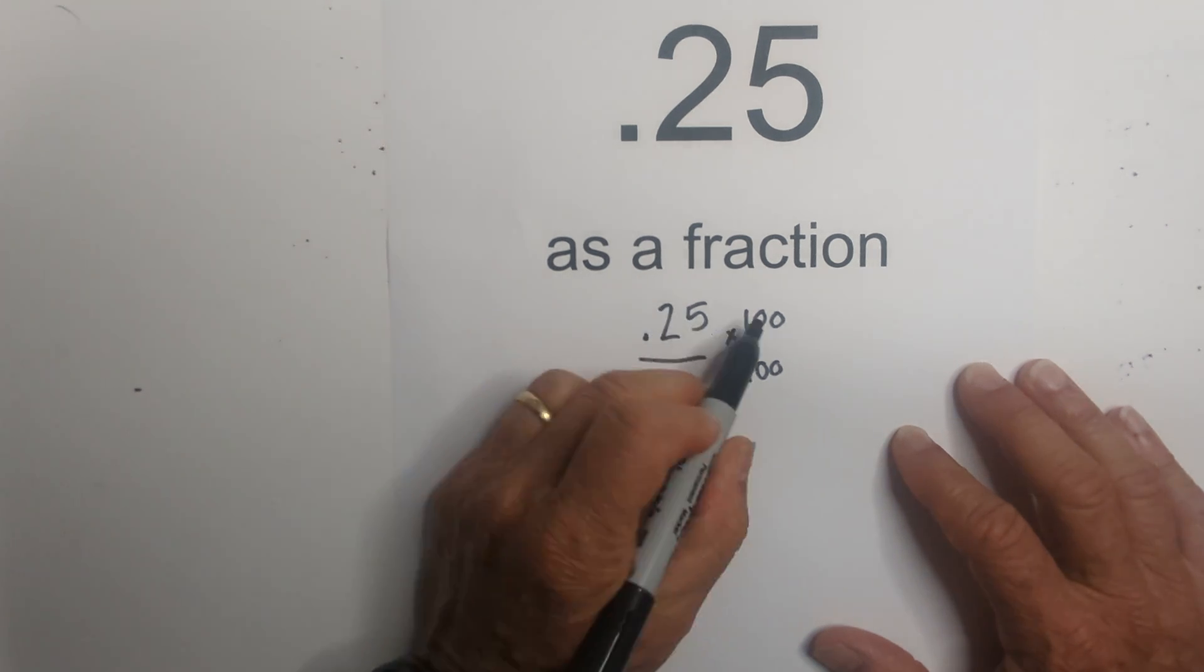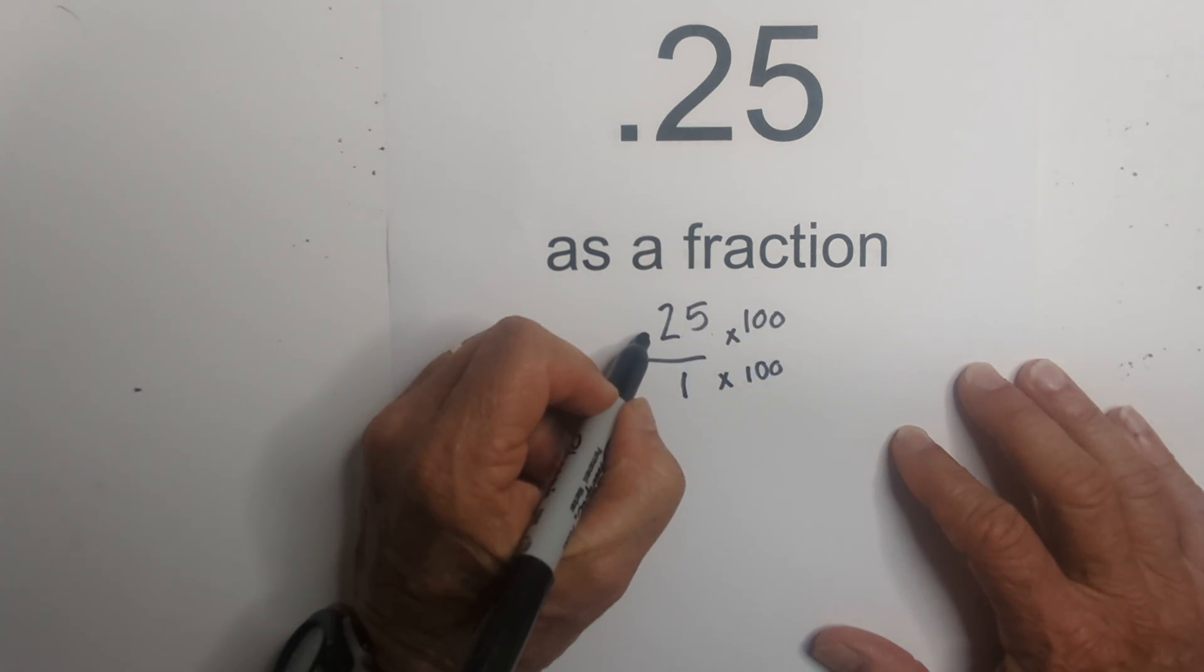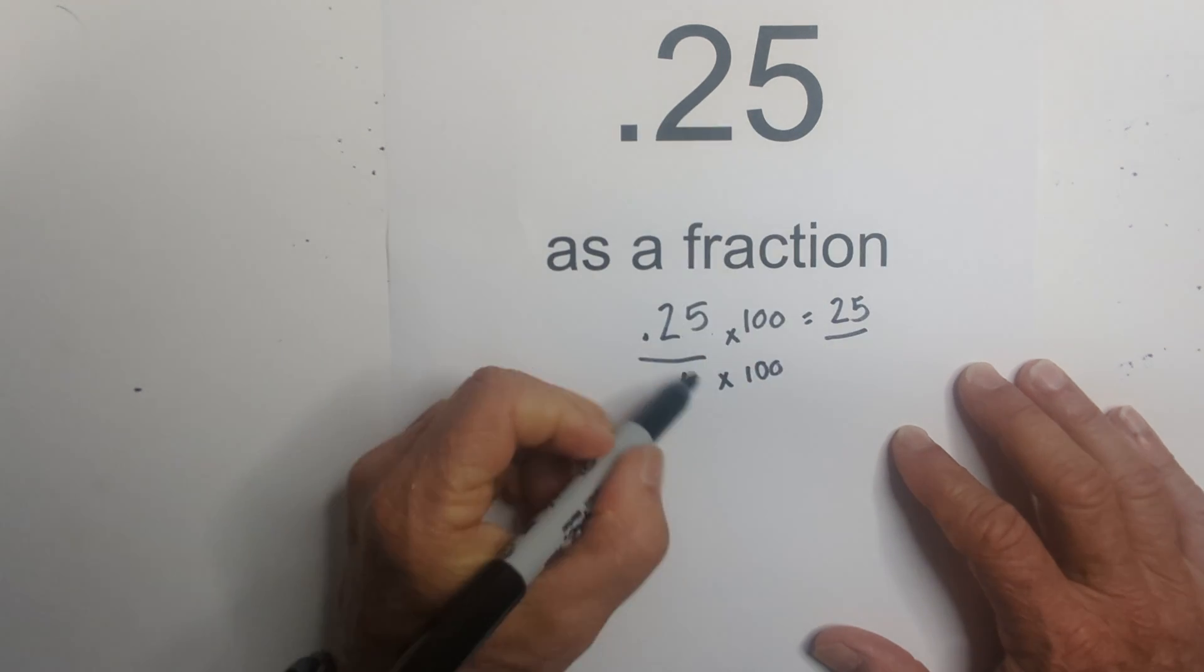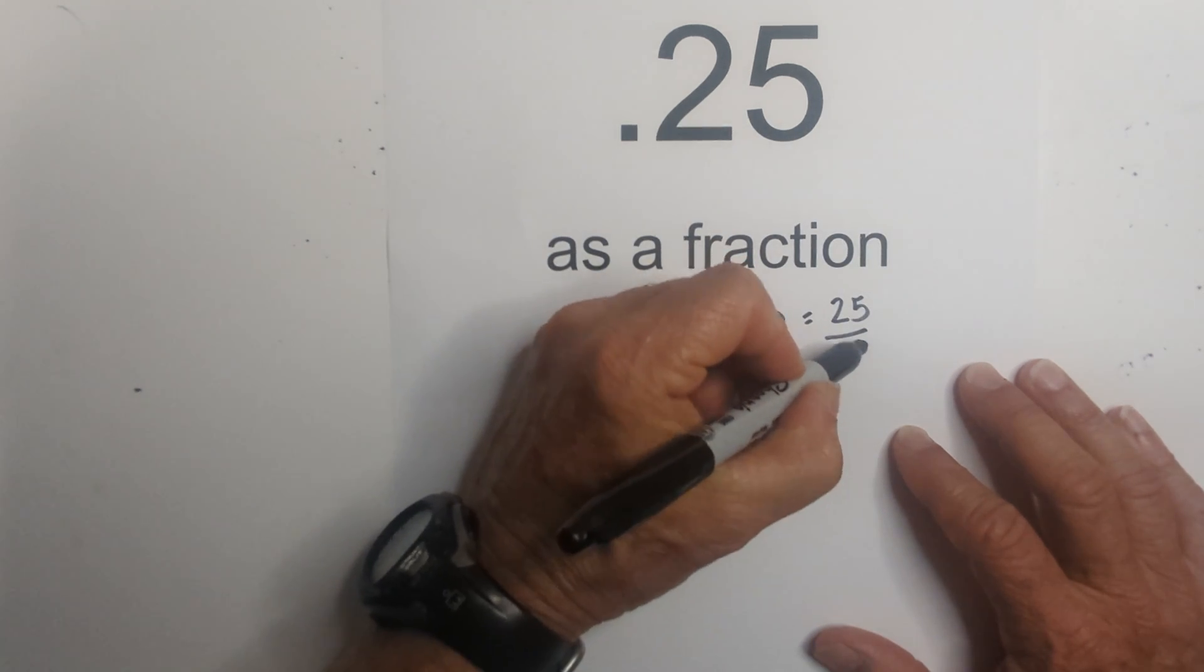I then multiply 25 hundredths by 100, which means I'm going to move the decimal two places to the right, so that equals 25, and then 1 times 100 is 100.